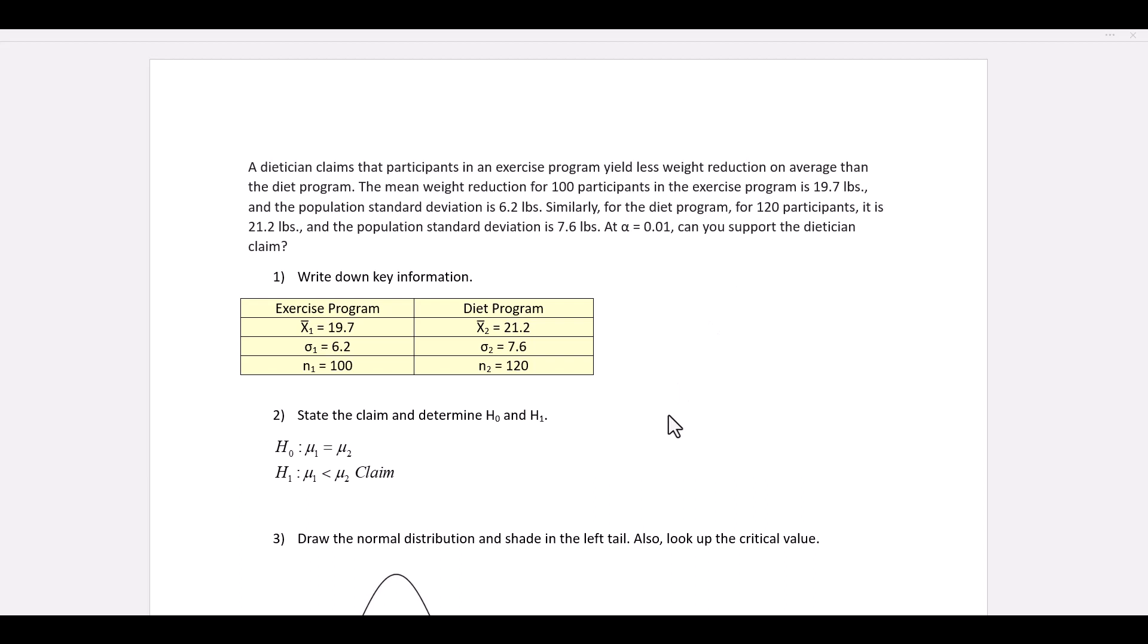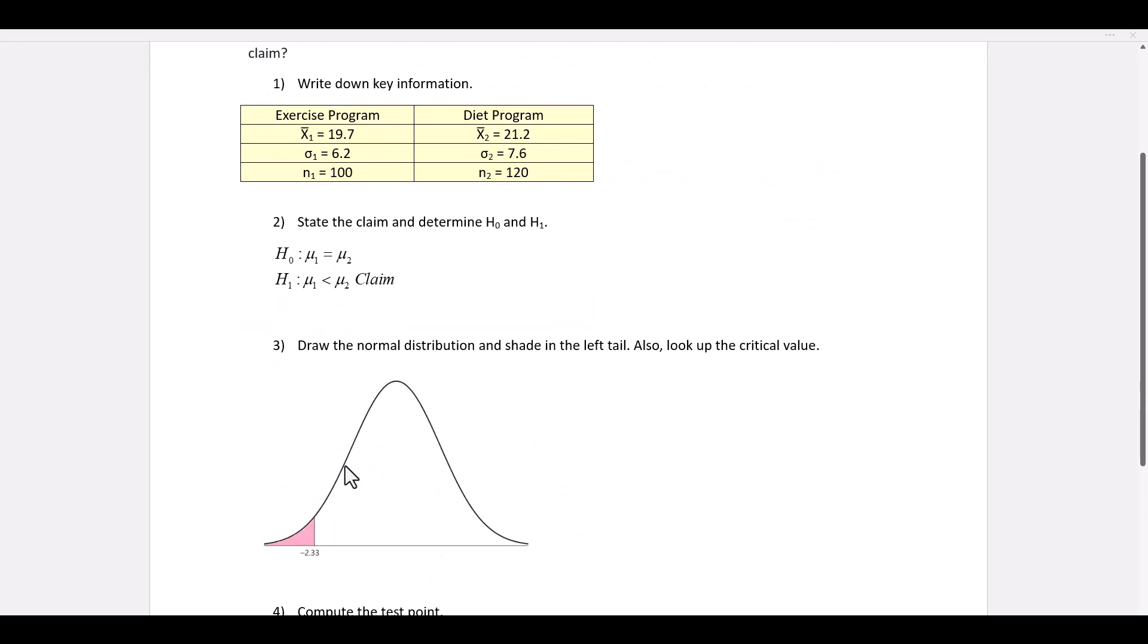For this type of problem, we are comparing two means. What it's saying is that the average weight loss for the exercise program is less than the average weight loss for the diet program. When we represent this, we write mu sub 1 is less than mu sub 2. That's the claim. Since it's less than, it's an H1 statement. H0 is that the two means are equal. We know it's a Z test because we are given the two sigmas, population standard deviations.